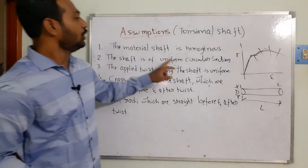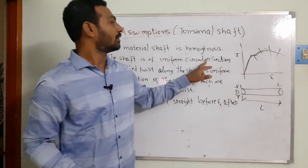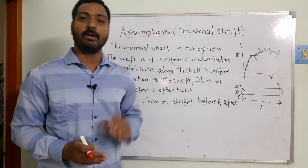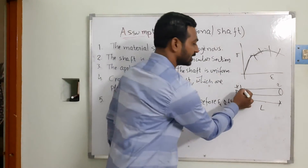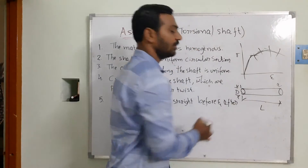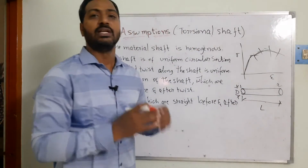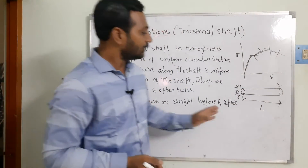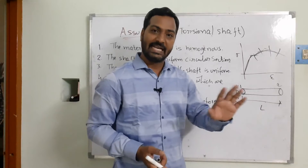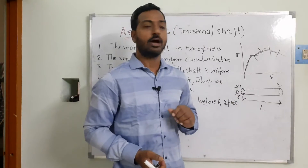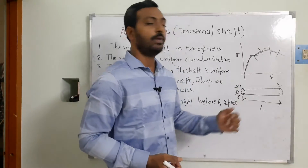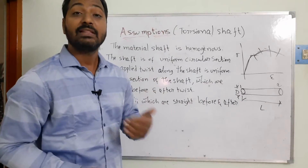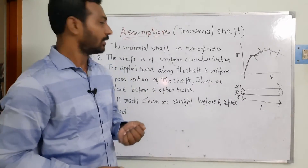The next assumption is that the shaft has a uniform circular cross-section throughout its length. For example, if the diameter is 10 mm at one cross-section, it is maintained as 10 mm throughout the entire length. On this basis we derive the mathematical model.